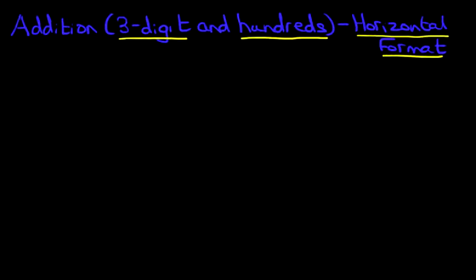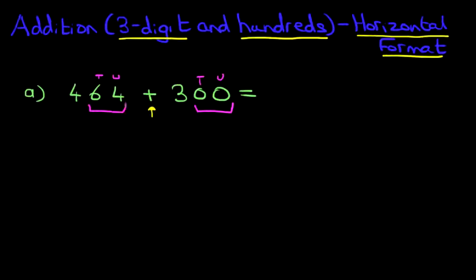So let's begin with our first example. So that is our question, 464 plus 300. Now the same principle applies when we were adding just 100. If you look at the number 300, what do we notice about it? There are two zeros, the units and the tens. So whenever we're adding hundreds to another number, the tens and the units do not change.